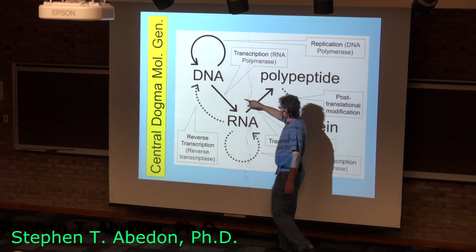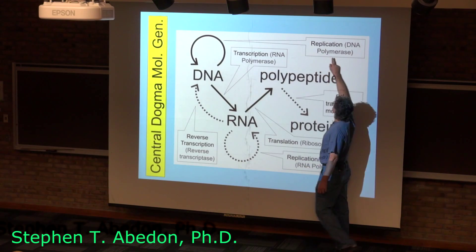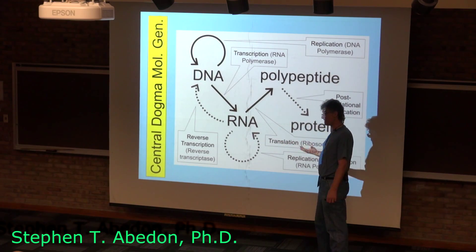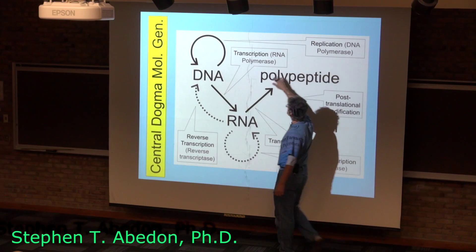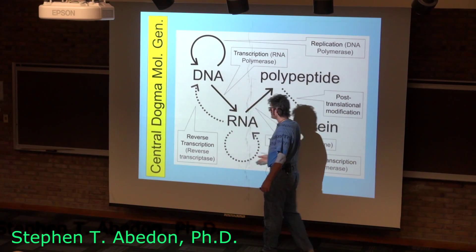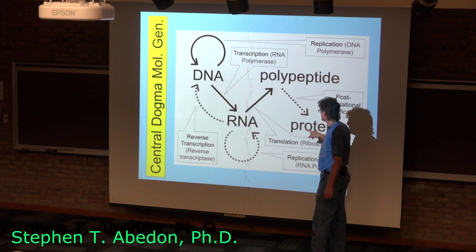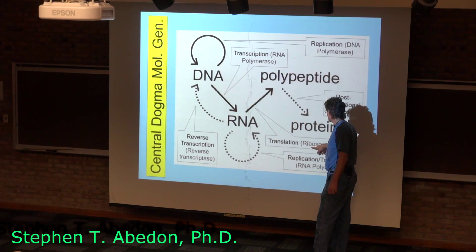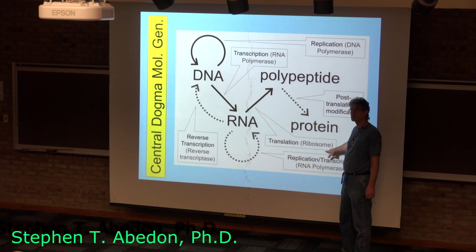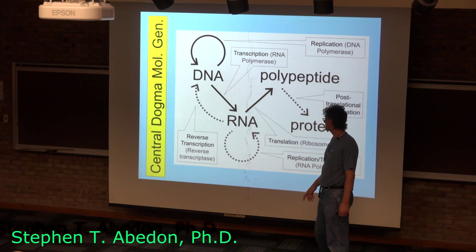The major enzymes involved in these processes are: DNA polymerase for replication, polymerizing the DNA; RNA polymerase for transcription, polymerizing RNA; and then for translation, a very large molecular complex called the ribosome that catalyzes that process.